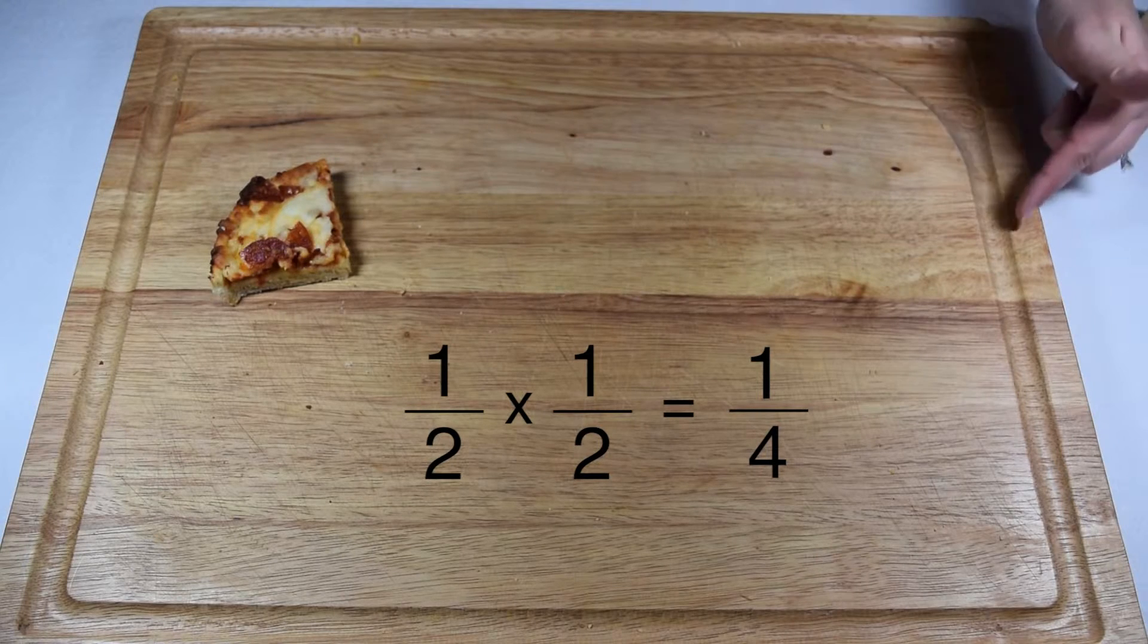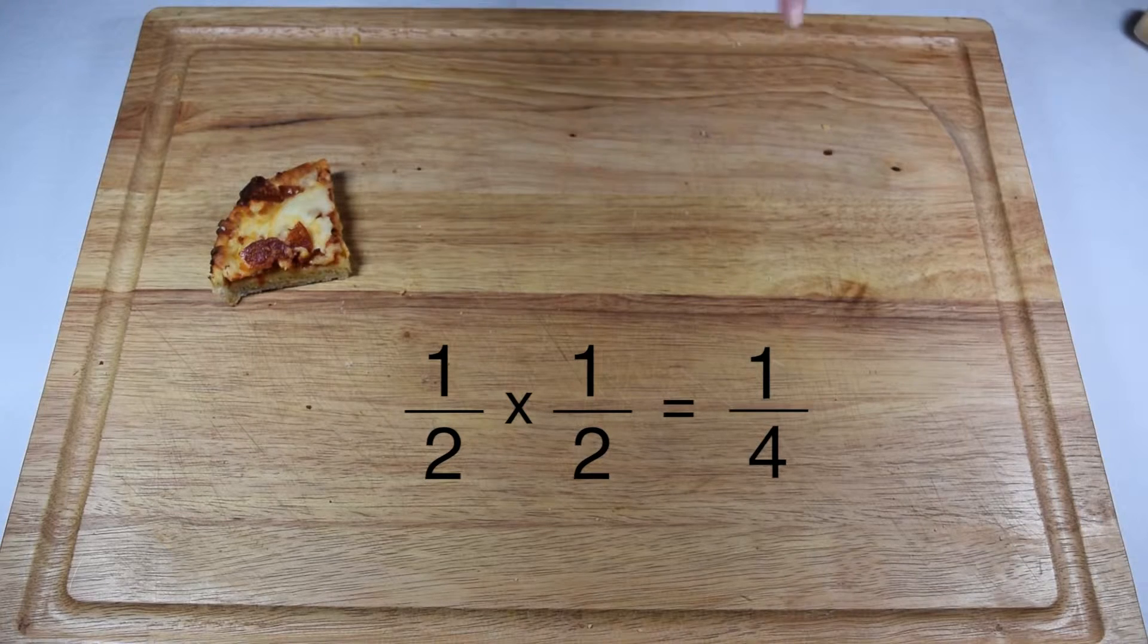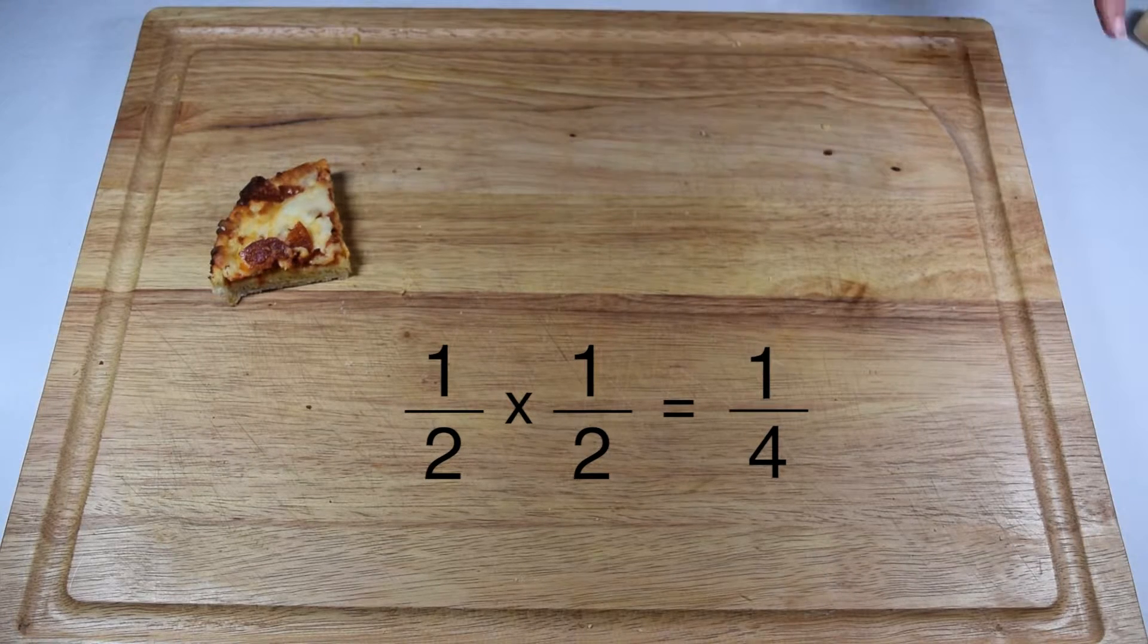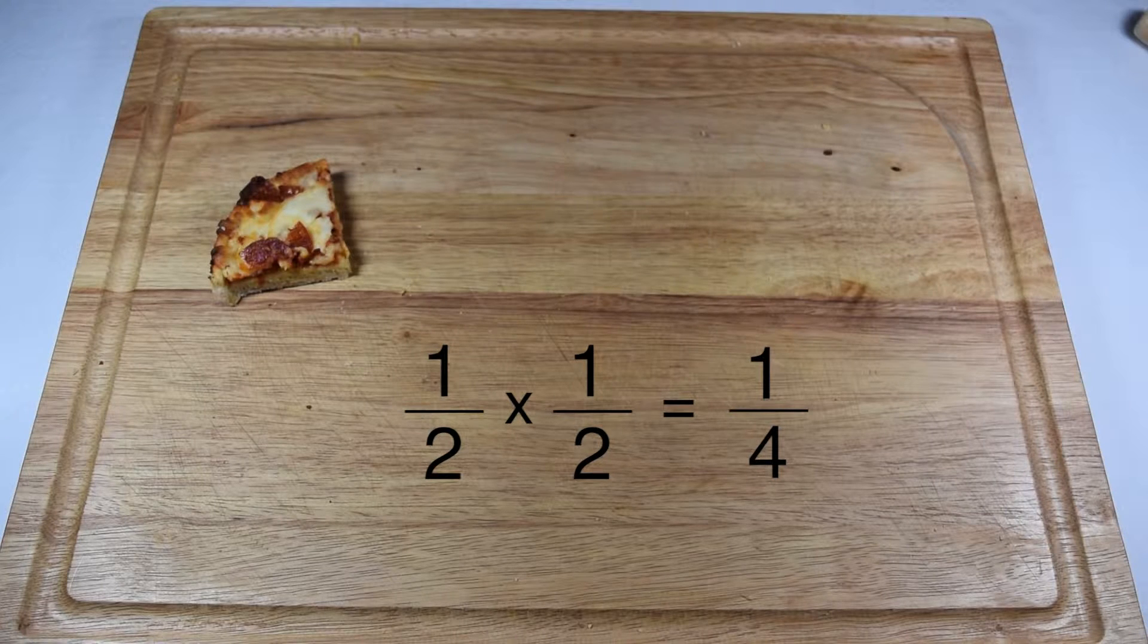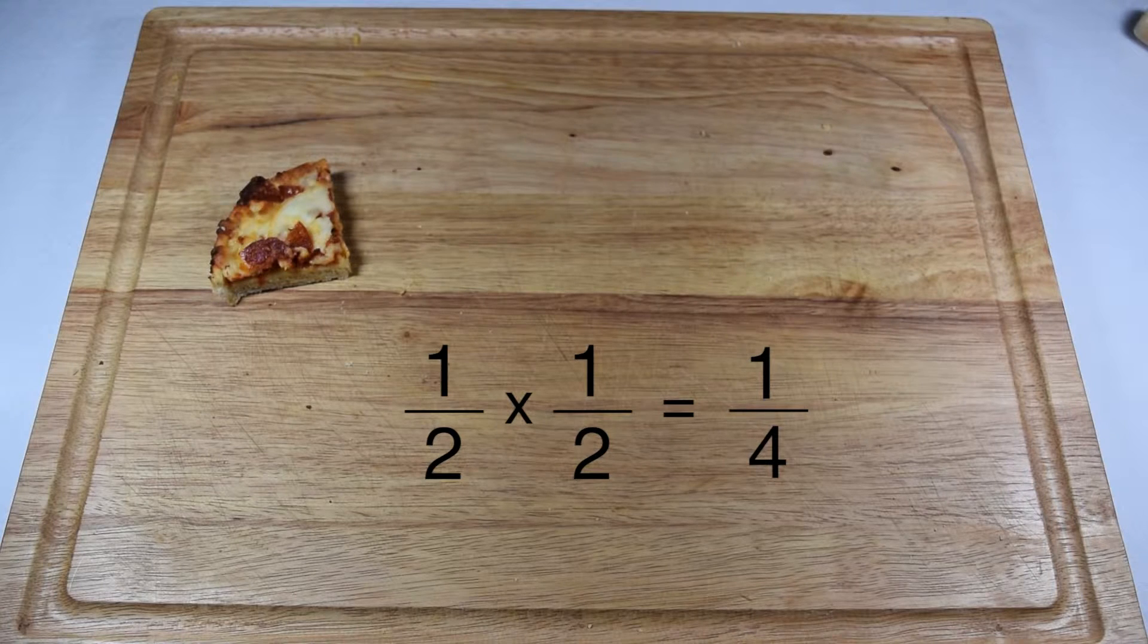To get to that same conclusion mathematically, let's look for a pattern. In our numerators, we have one, one, and one. Well, that means I could do one times one to give me a numerator of one. And in my denominators, I have two, two, and four. Well, I could do two times two to give me four.